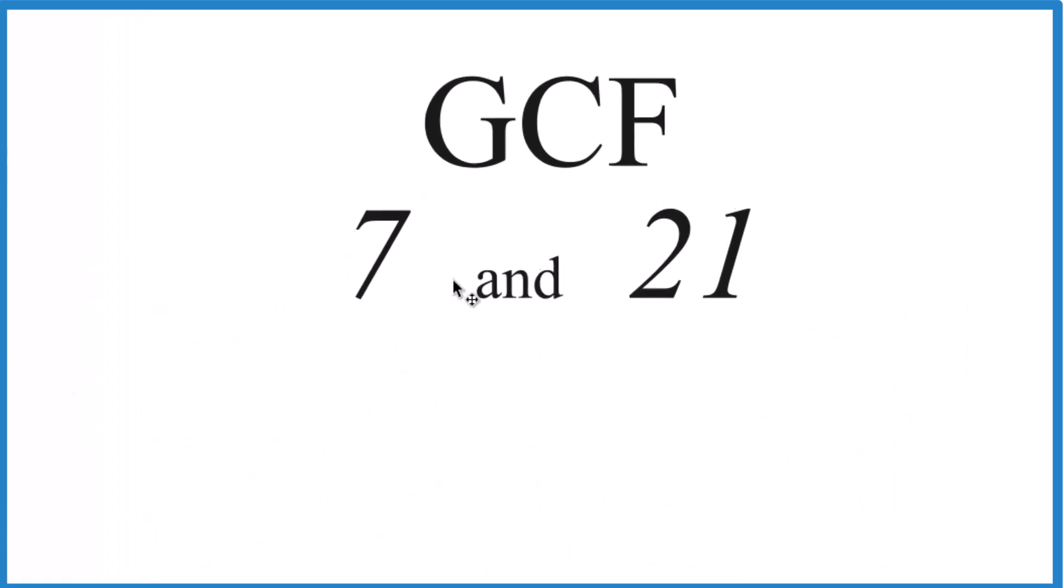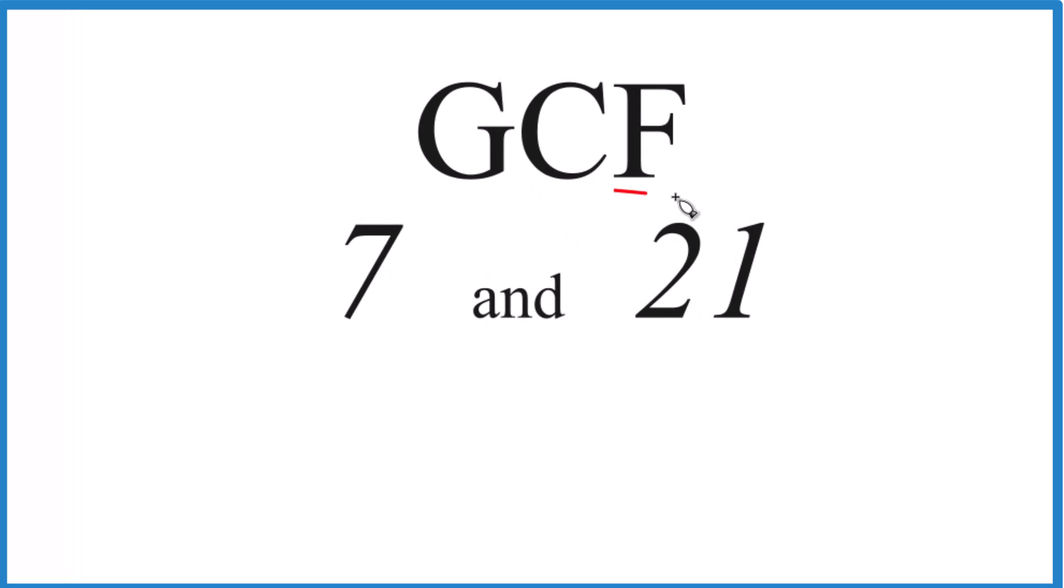So we're going to make a list of all the factors of 7 and 21. We're going to find the common factors, and then we're going to choose the greatest one. That's the GCF. So for 7, 1 times 7 equals 7, but that's it. Those are the factors.